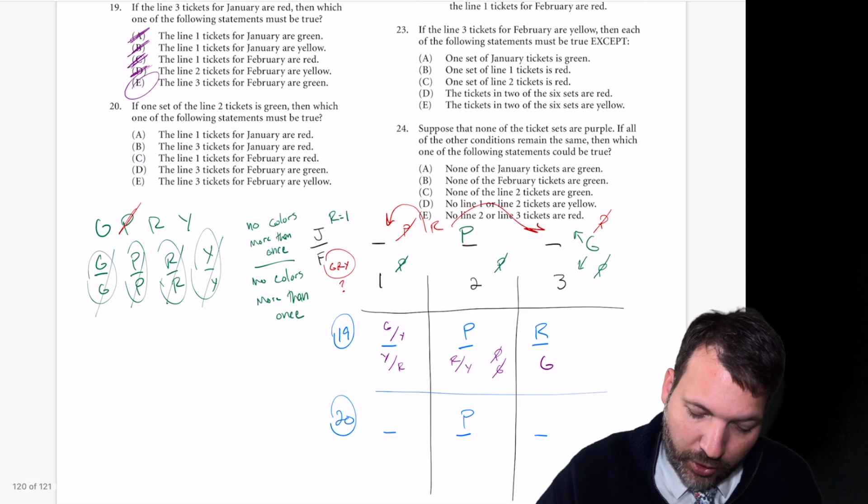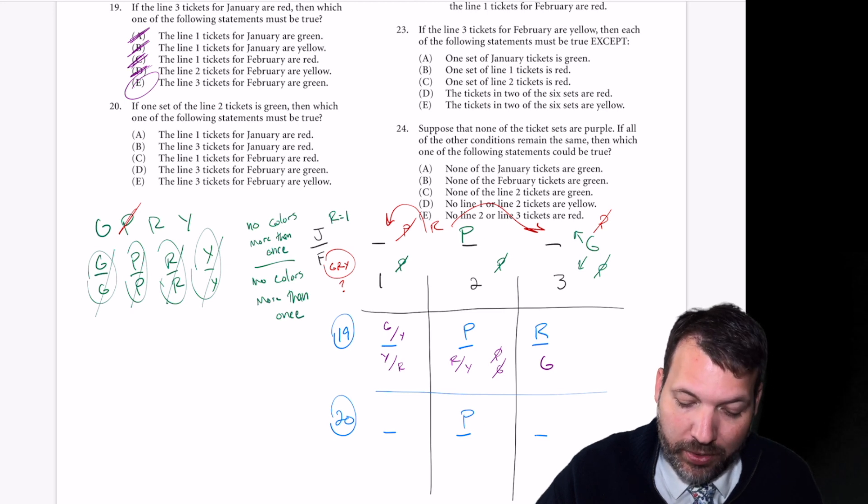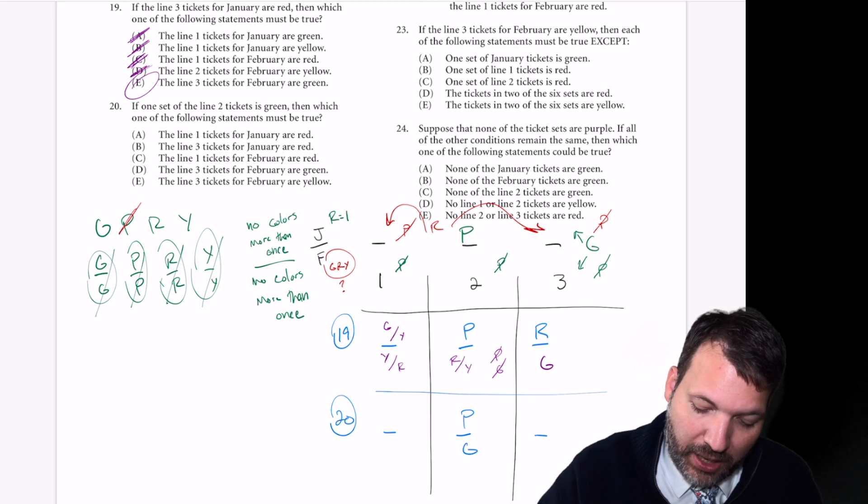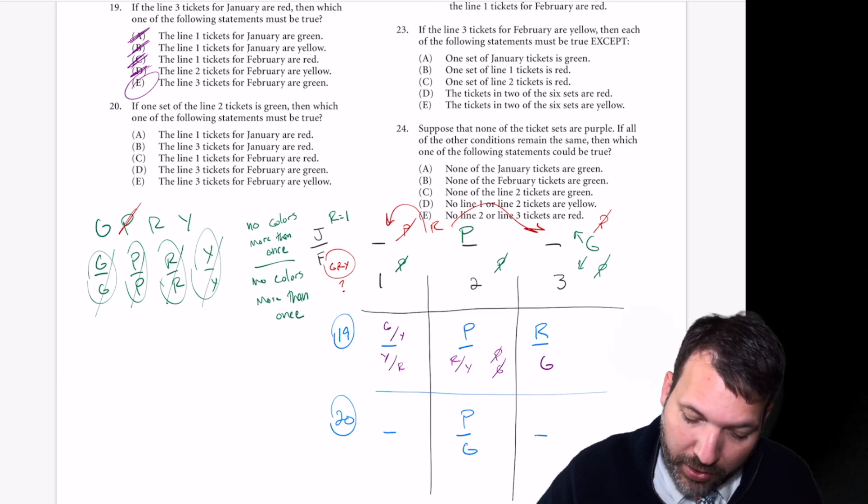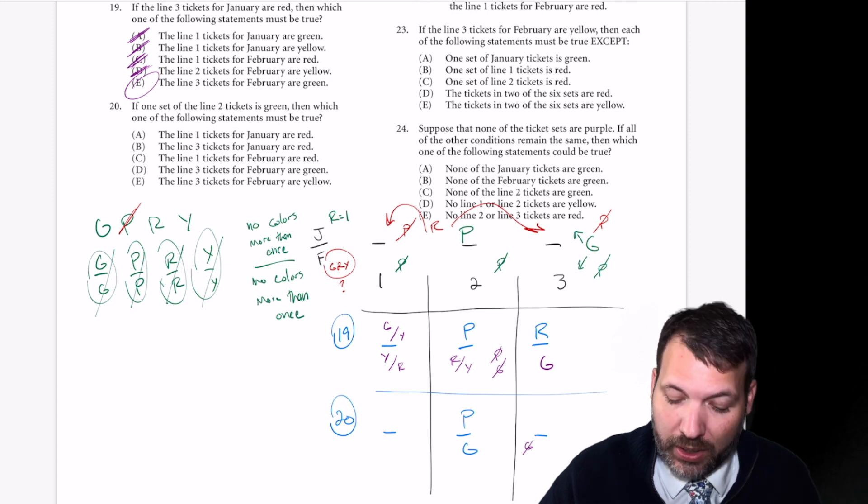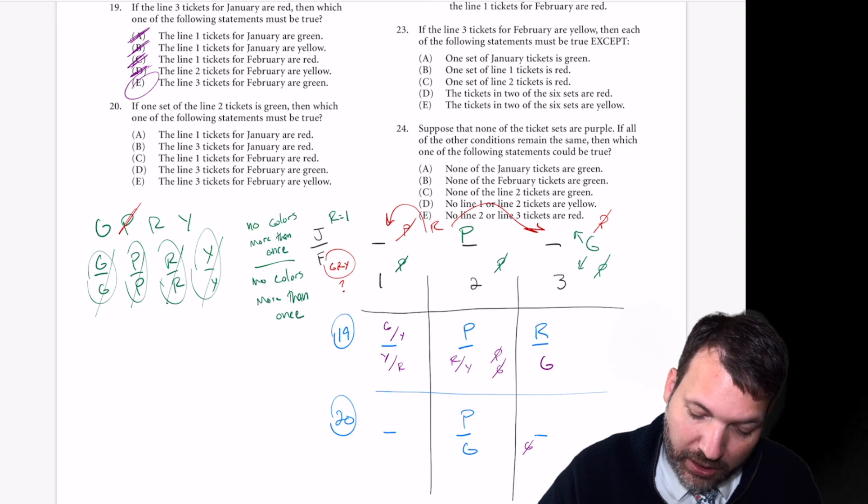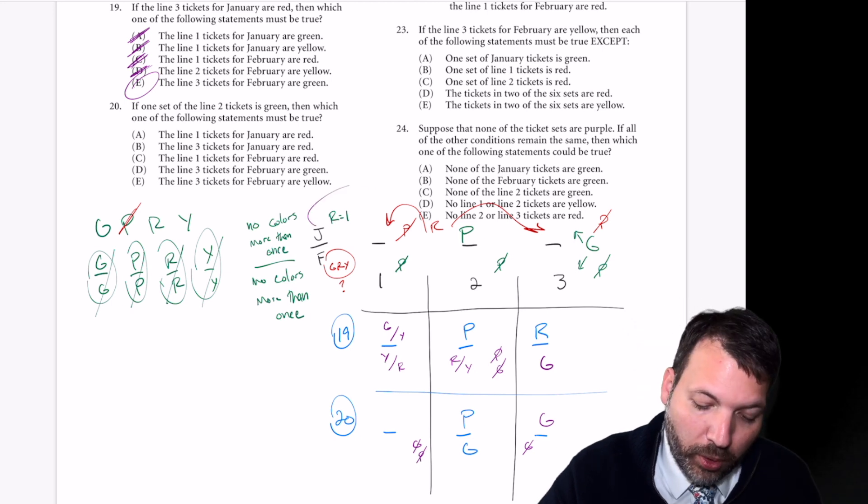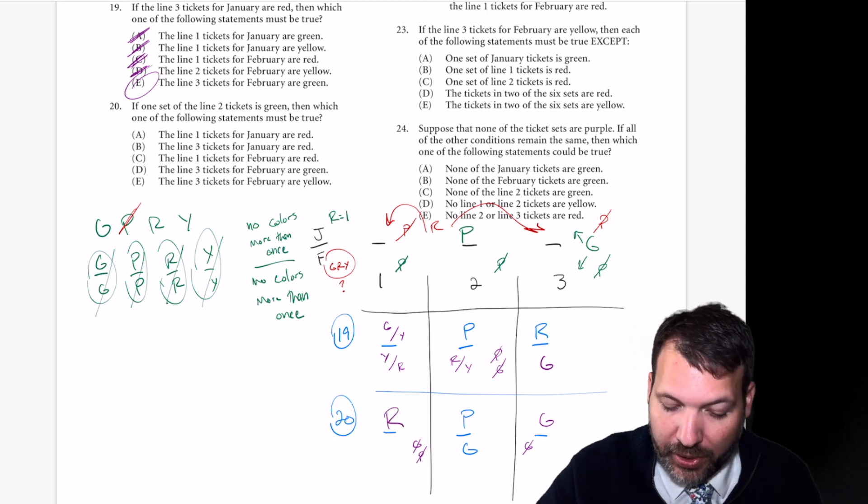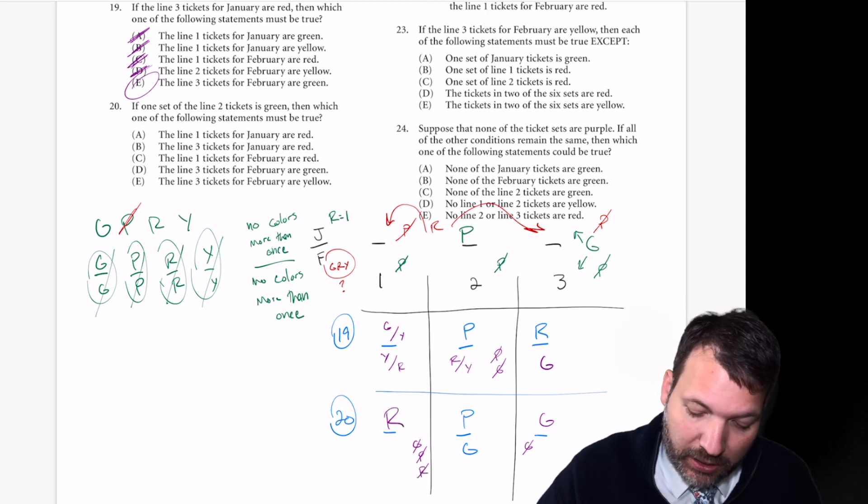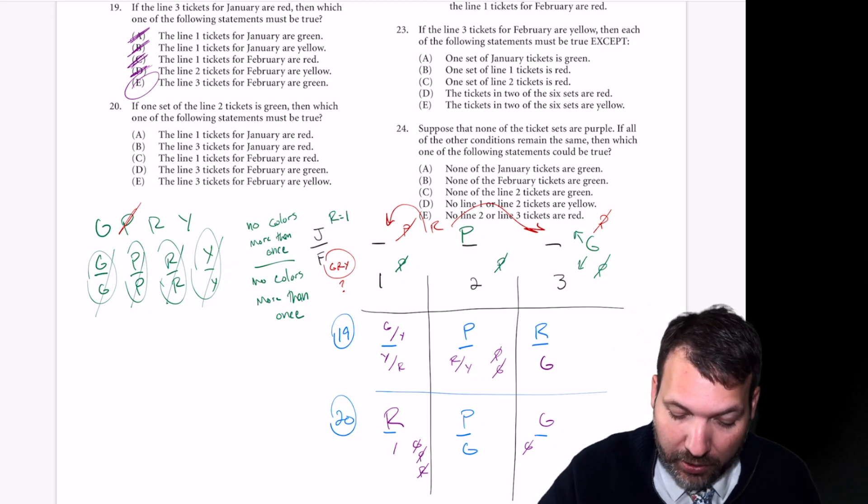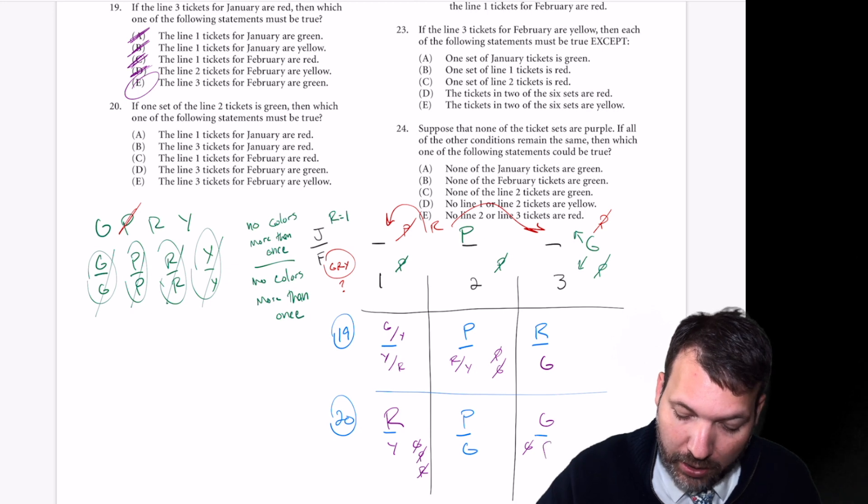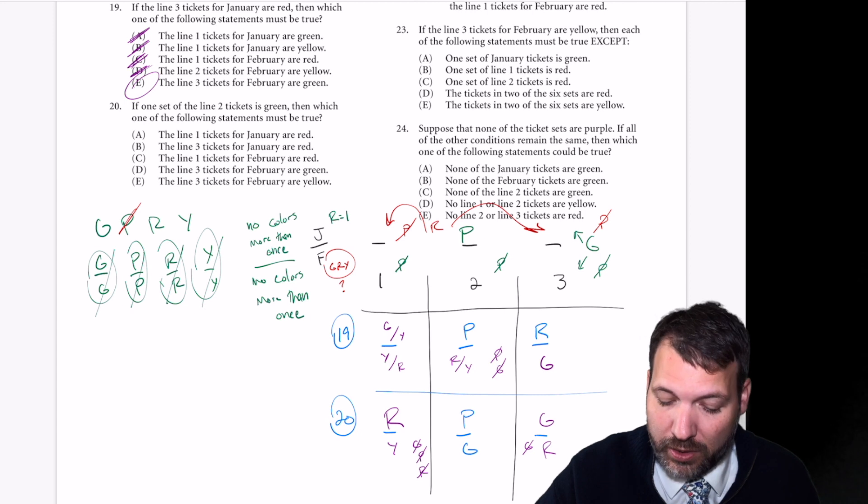Let's go ahead and work on number 20. I've already brought down what we know. If one set of the line two tickets is green, which one of the following statements must be true? Well, since we know that January for line two is already purple, then that means that has to be green. And then from there, we know that line three February could not be green. We can't use them again. So that means that green is going to have to go in that line three January slot. We also know line one can never be purple, can't be green right now. I was about to say could be red or yellow, but I can see now. Remember, red is going to have to get used once for January. So the only place that can happen right now is line one, which means that line one February has to be yellow. That's the only thing left over. And that means that red is going to be line three February.